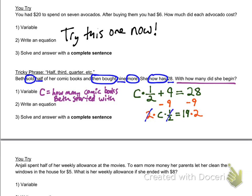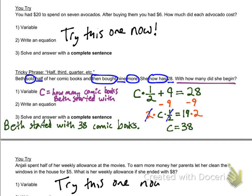I can do 19 times two in my head, but I have to think more about 19 divided by half. Two times a half is one, so that's why I cross those out—they divide out—and so you get C equals 19 times two, or 38. That means Beth started with 38 comic books. Write that out in a complete sentence. Go ahead and try the next one that uses the word half again.